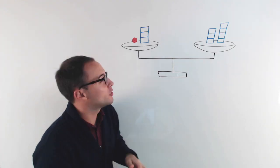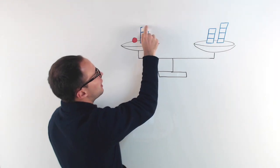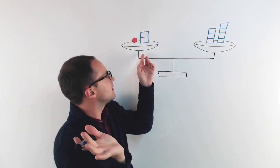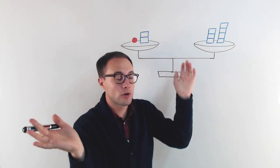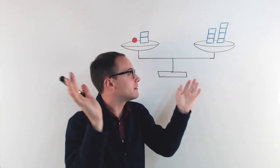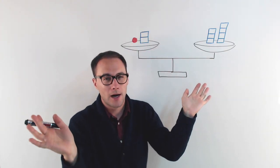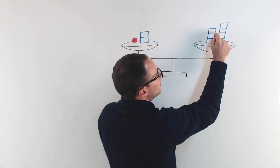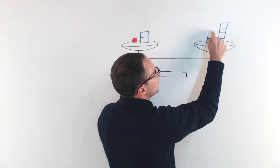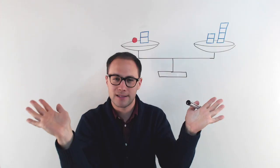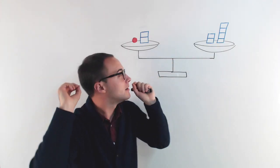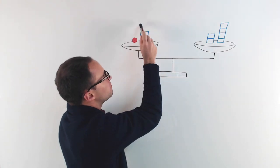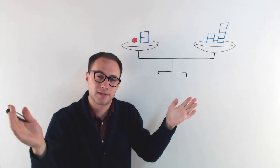Well, one thing I could do is take one of these blocks away. But if I did that to one side, they were balanced and now that side is going to be lighter. So that would go up. But with equations, I want it to be equal — this side equal to this side. So if I took one away here, I also take one away from the other side. Then it stays balanced. I could take away the same amount from each side and it stays balanced. I could also add — if I put another blue block on, one on each side, it stays balanced.